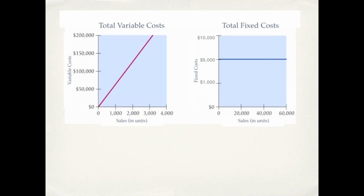The graph on the left represents our total variable cost. We're given our sales in units on our x-axis and our y-axis is our variable cost. You can easily see as our sales increase, so does our total variable cost.